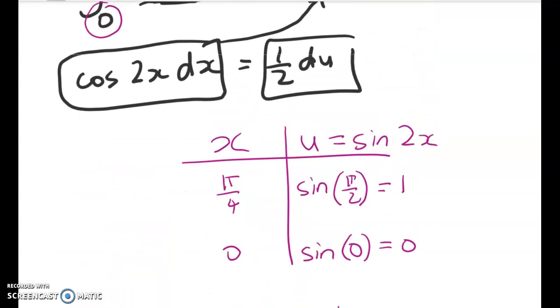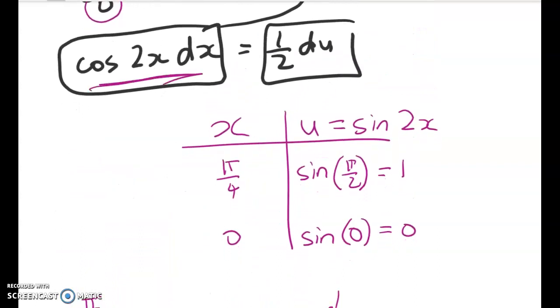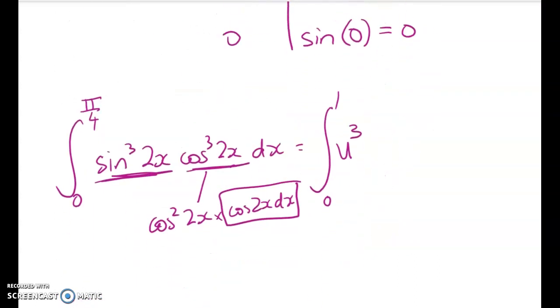And then I can split this up into cos squared 2x times cos of 2x dx. And from up here, we knew that this was equal to half du. So let's just leave the cos squared of 2x sitting there. And know that we're going to have to come back to that and fix it up.